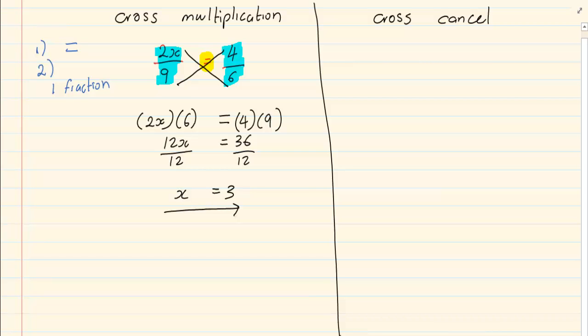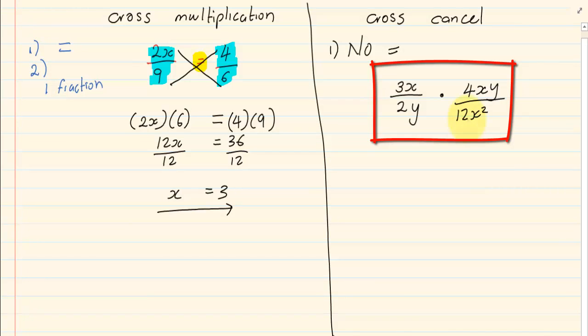Now when we're doing cross cancel, there is no equal sign. That's the major difference between the two questions. Let's take the following example: 3x over 2y times 4xy over 12x squared. Notice no equal sign.